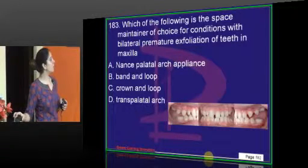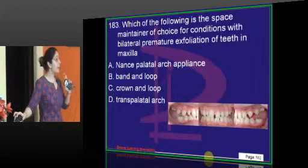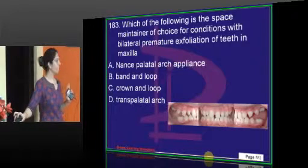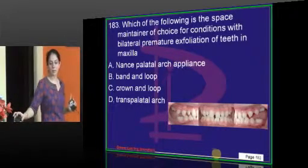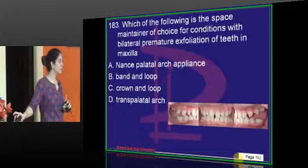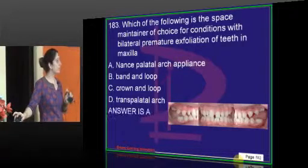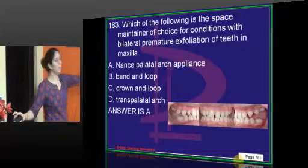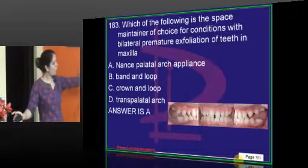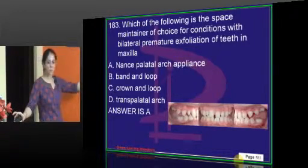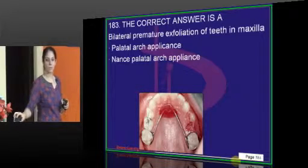The space maintainer of choice for bilateral premature exfoliation of teeth in the maxilla is the NANCE appliance. When you think bilateral, the options narrow down. Transpalatal arch is not used as a space maintainer — it is mainly used for anchorage purposes. NANCE appliance is the correct answer; remember the diagram and picture to recall its uses.